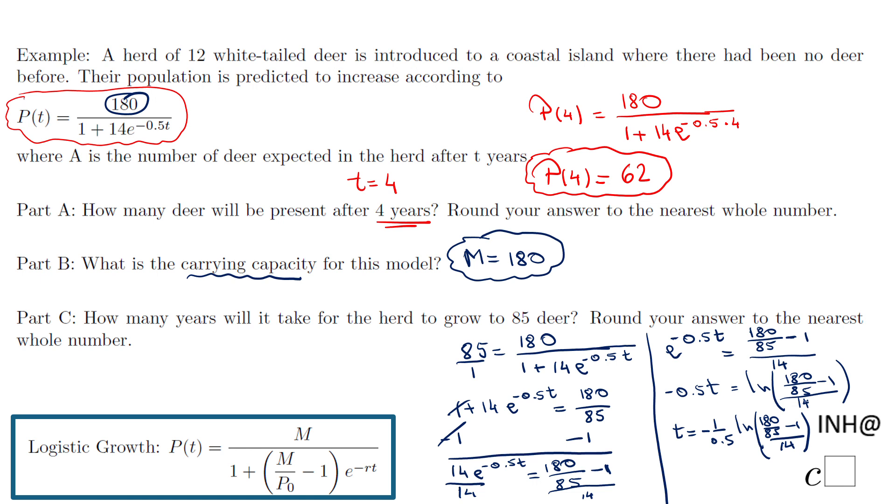I'm going to grab the calculator and I'll do natural log of, again, it is a fraction, so 180 divided by 85 minus 1, that will be for the numerator. The numerator of this fraction, and then the denominator is that 14.